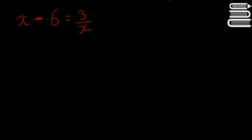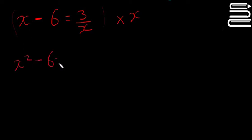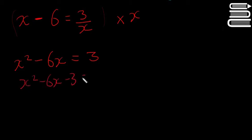In this video we look at some more quadratic equations. This question is one of the harder examples — it doesn't look like a quadratic equation straight off, but it is. First, since we have X in the denominator, we're going to multiply both sides by X to get rid of it. Multiplying everything by X gives us X squared minus 6X equals 3, and rearranging gives X squared minus 6X minus 3 equals 0.